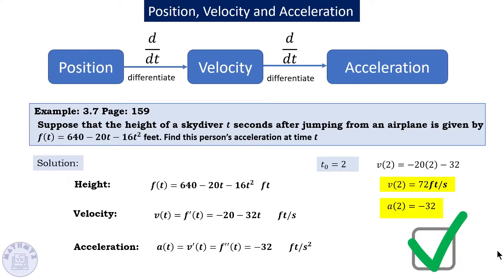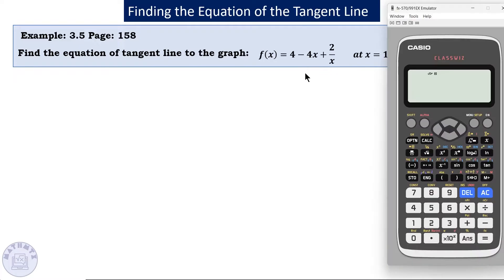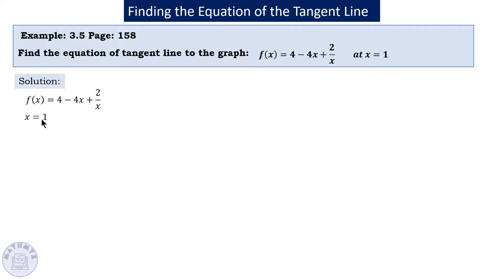Find the equation of the tangent line to the graph at x = 1. You can find the derivative using a calculator: press shift to get the derivative, write the expression, substitute x = 1, and that gives the slope of the tangent line. Pause the video and try it yourself — we covered tangent lines and velocity in a previous video.